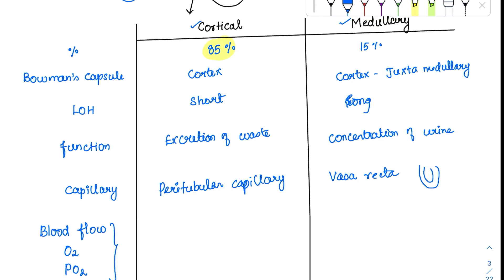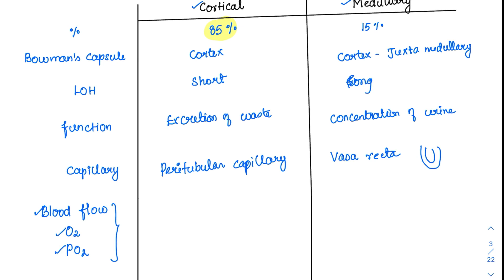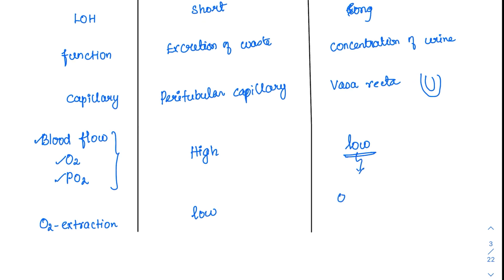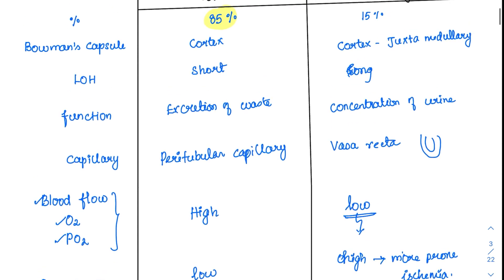The special feature of the vasa recta is that it runs parallel to the loop of Henle. Regarding blood flow, oxygen, and partial pressure of oxygen — all are very high for cortical nephrons with a huge blood supply, so O2 extraction is low. Whereas for medullary nephrons, blood supply and PO2 are low, so O2 extraction is high. This makes medullary nephrons more prone to ischemia, as they extract maximum oxygen and are vulnerable even at minimal depletion.